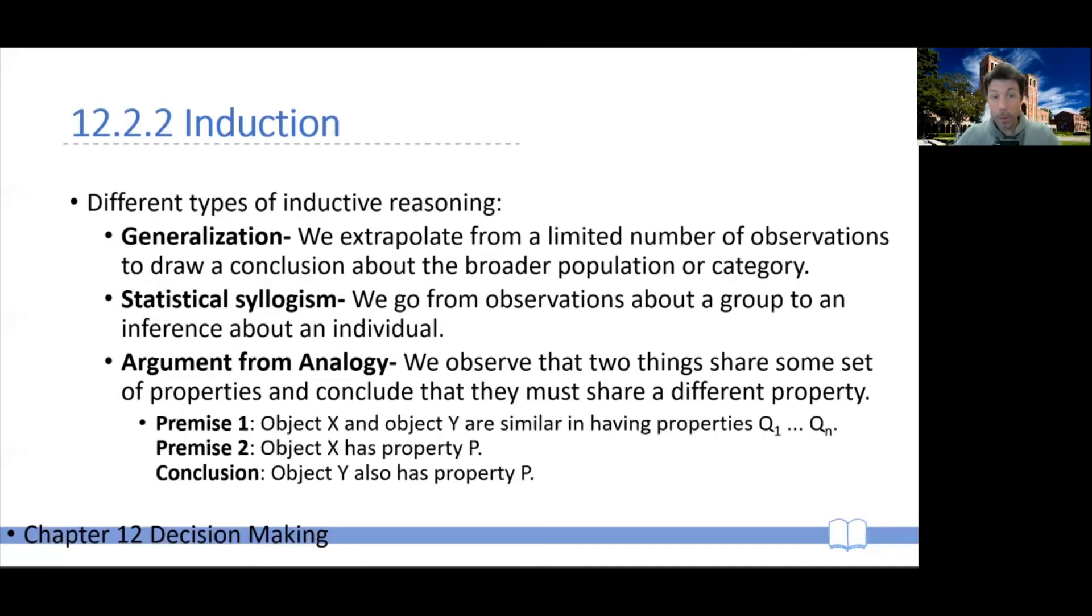So from a formal point of view, it might look like this. Object X and object Y are similar in both having properties Q1, Q2, Q3, Q4, QN. Object X also has property P. Therefore, it stands to reason that object Y might also have property P. Even though you haven't seen it, you don't know it.